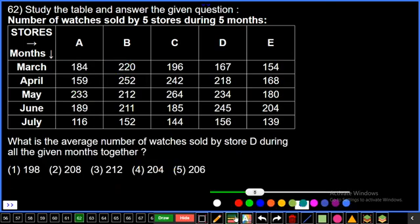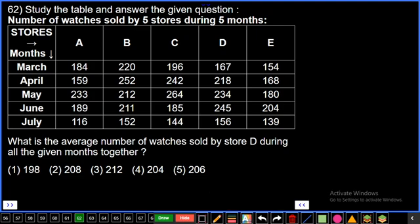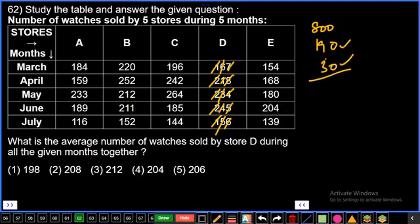Question number 62: What is the average number of watches sold by store D during all the given months together? Store D, all months, average. Add them and divide by 5. 167 plus 218 is 385. Next add: 100 plus 200 is 300, plus 200 is 500, plus 200 is 700, plus 156 is 856. Then 60 plus 10 is 70, plus 30 is 100, plus 50 is 150. 7 plus 8 is 15, plus 4 is 19, plus 6 is 25. Total is 1020. Divided by 5: 1000 by 5 is 200, and 20 by 5 is 4. Answer is 204.